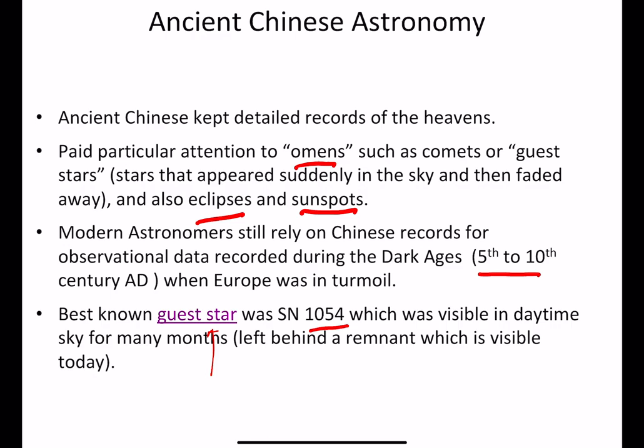This particular supernova was not just seen by the Chinese — it was seen by people all over the world. There are ancient Native American cave drawings from the same period which seem to indicate a bright object in the sky, so they probably also saw it. That is ancient Chinese astronomy.